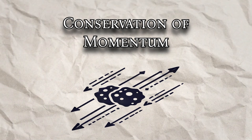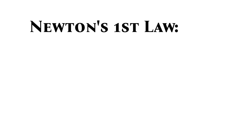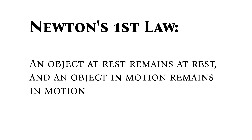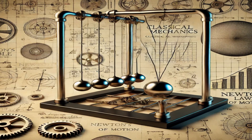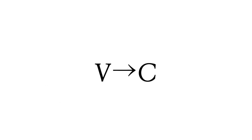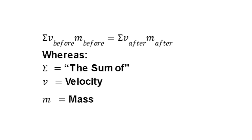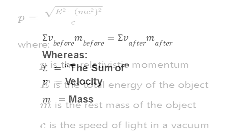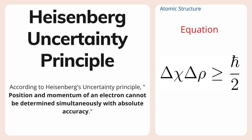Conservation of Momentum. This is a fairly fundamental principle in physics, stating that the total linear momentum of a closed system remains constant. This is a consequence of Newton's first law, which states that an object at rest remains at rest, and an object in motion remains in motion at a constant speed and in a straight line, unless acted on by an unbalanced force. In relativistic contexts where speed approaches the speed of light, momentum must be considered in conjunction with energy and mass, and its definition must be modified from our classical understanding. Additionally, in quantum mechanics, the concept of linear momentum conservation seems less fundamental due to quantum fluctuations and the uncertainty principle.